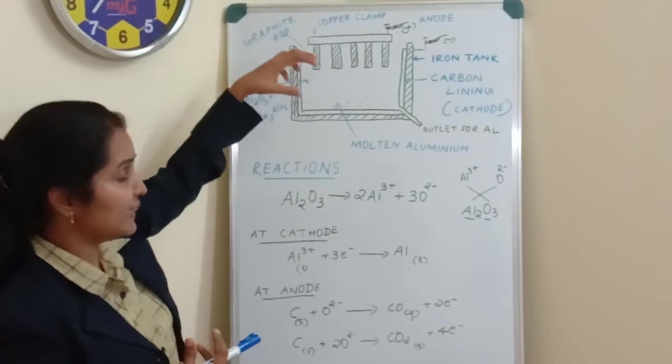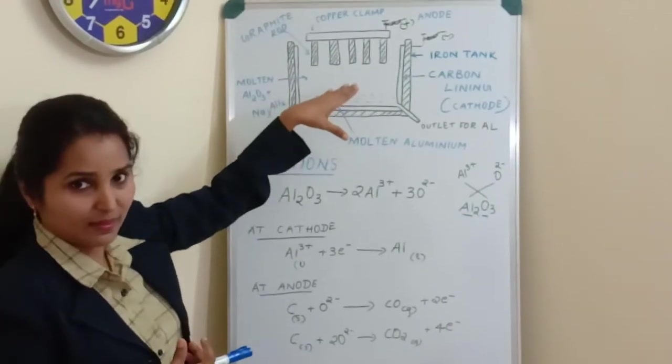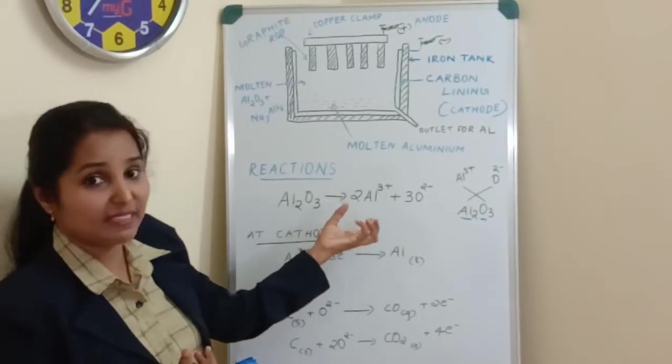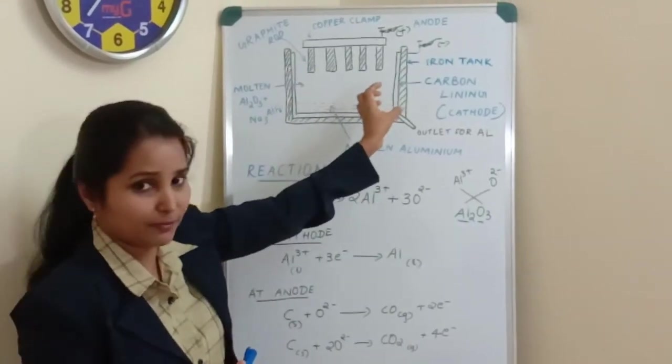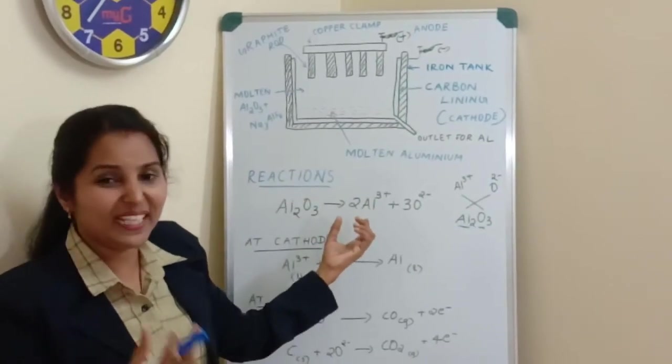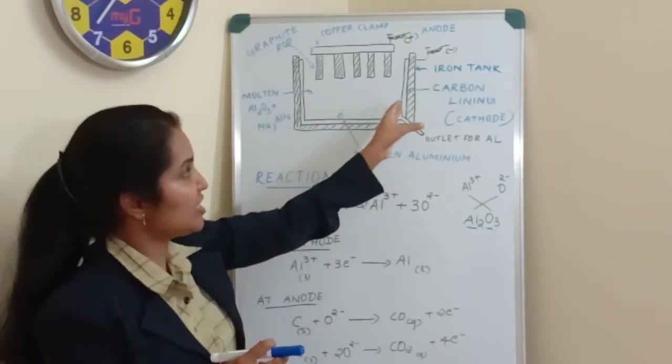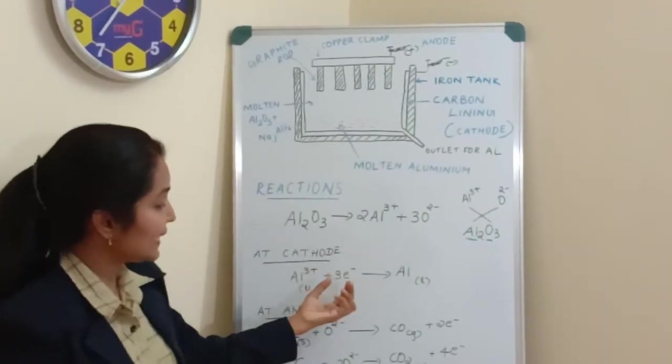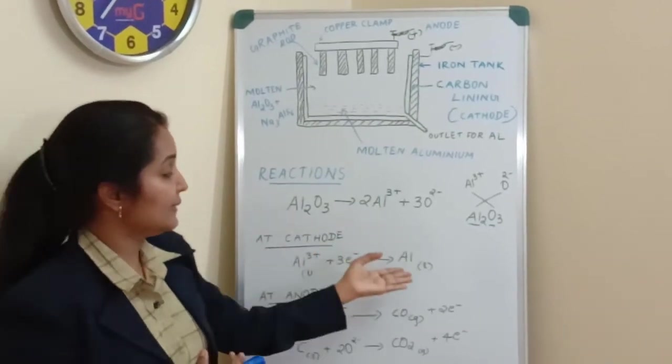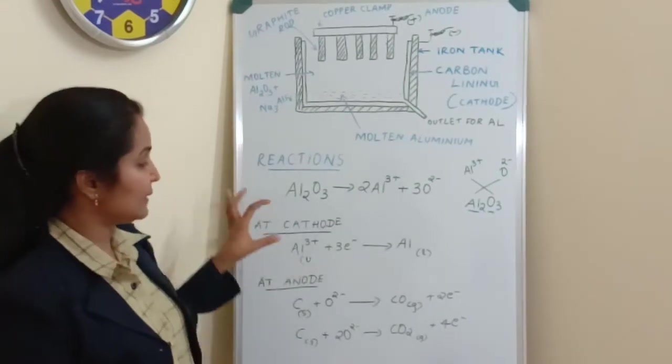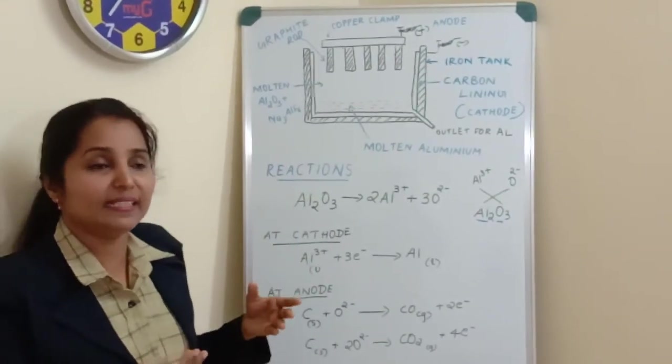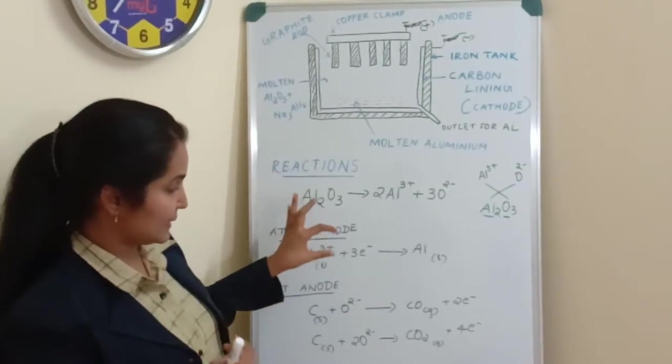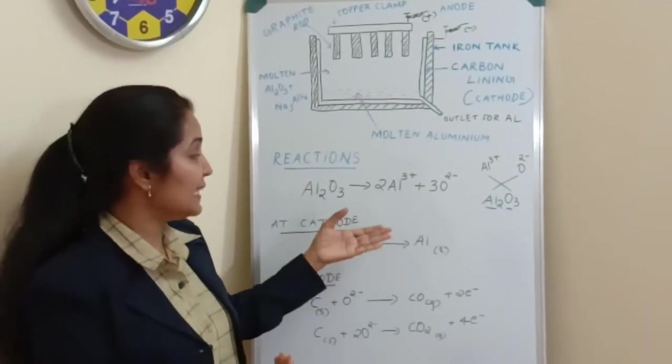And what happens? Once this Al3+ ions are formed in the electrolyte, this cathode is negatively charged and so this negatively charged cathode which is this carbon lining will attract this positively charged cations that is Al3+ to itself. Being deficient, as you see it is 3+, being deficient with 3 electrons, it will reach to the negatively charged cathode which is electron rich. It will accept 3 electrons from the cathode and will get reduced to liquid aluminum. So here reduction happens. As you know, when concerning electron transfer reactions, when an element accepts electrons it undergoes reduction. So Al3+ accepts electrons to form aluminum, that is reduction happens at cathode.